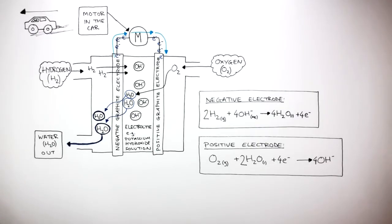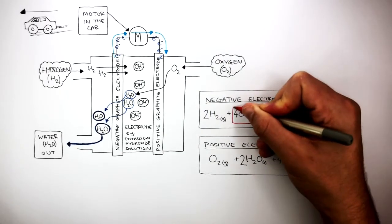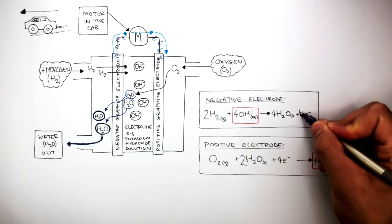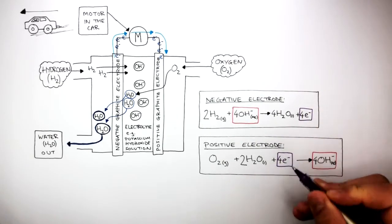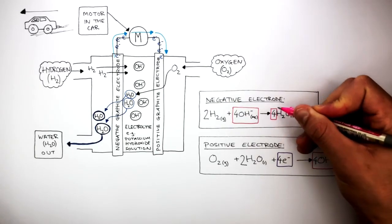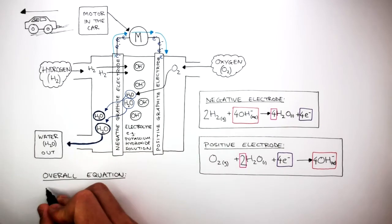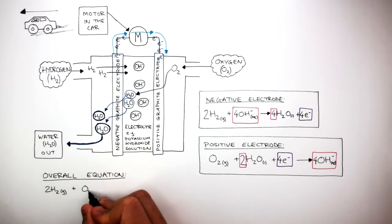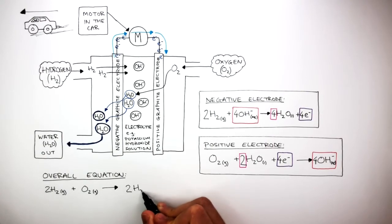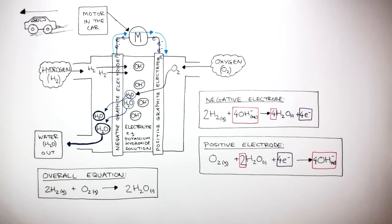These are both half-equations which show what happens at each electrode. Comparing the two half-equations, we can see the four hydroxide ions cancel each other out, as do the four electrons on either side. There are four water molecules formed at the negative electrode and two water molecules involved at the positive electrode. So the overall equation is 2H2 + O2 → 2H2O. This is the overall equation for the hydrogen fuel cell, derived using the two half-equations at each electrode.